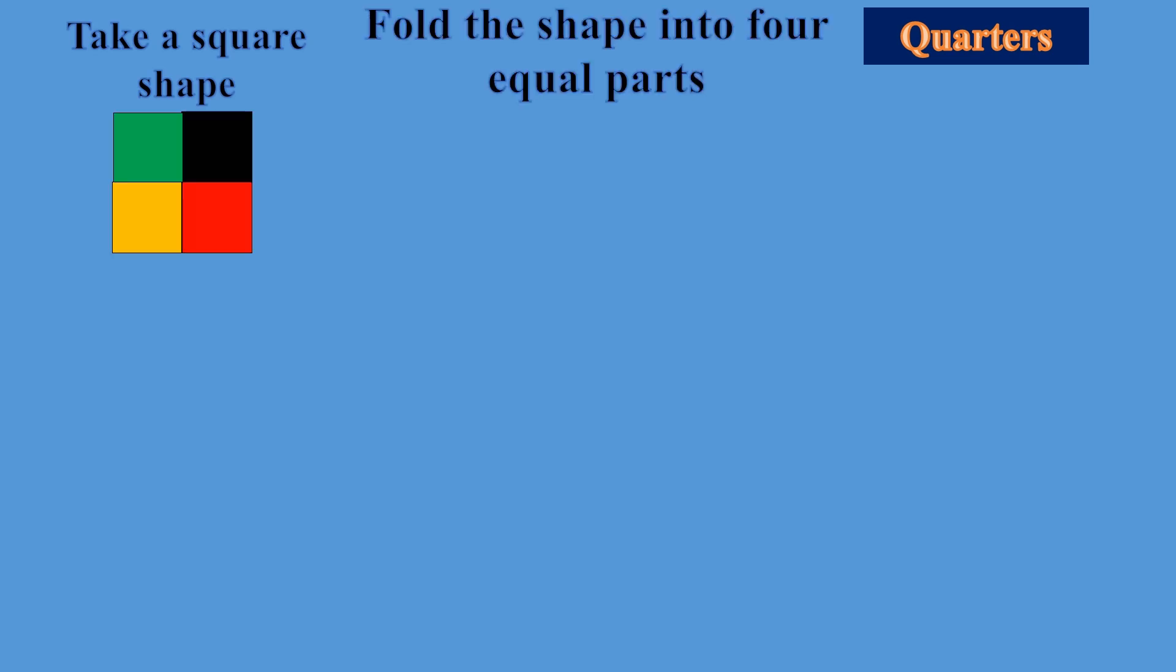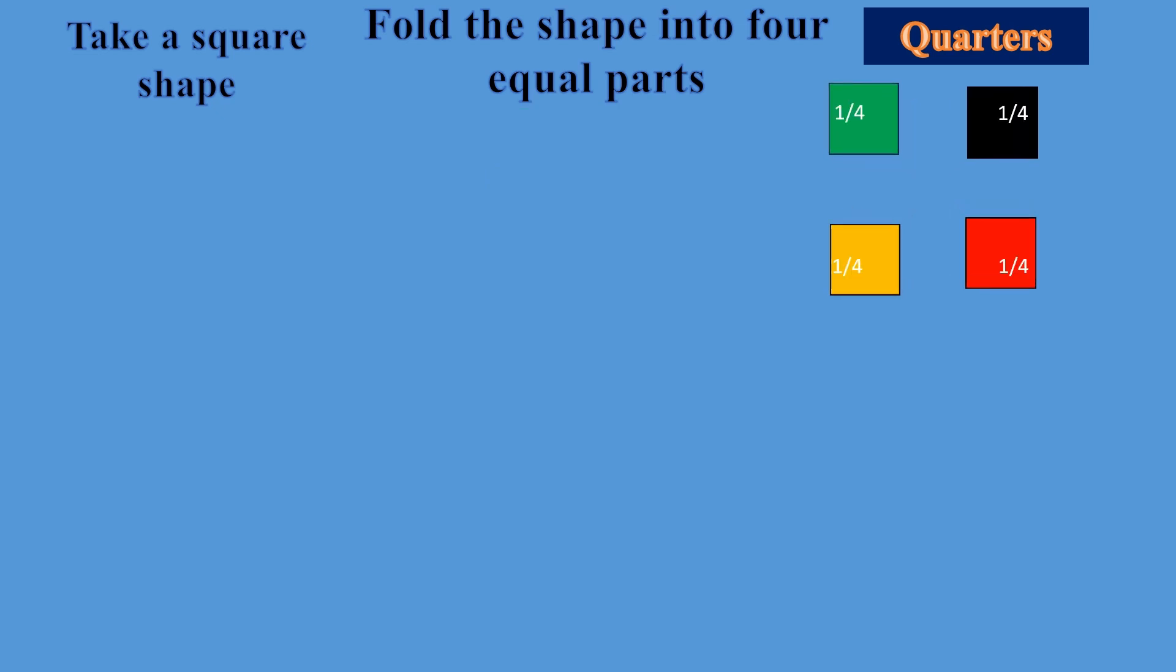So let's learn about quarters. Take a square shape, fold the shape into four equal parts and cut it along both vertically and horizontally. Then what happens? You get four parts like this, and each part is 1/4.